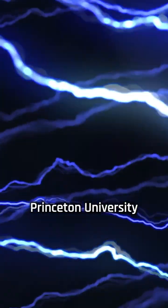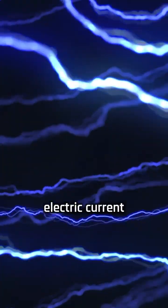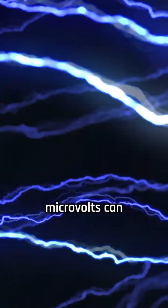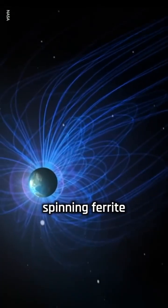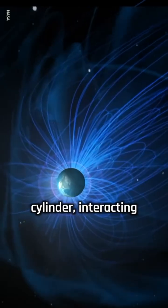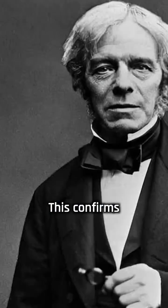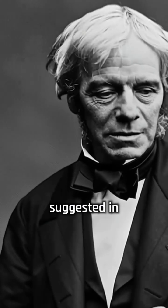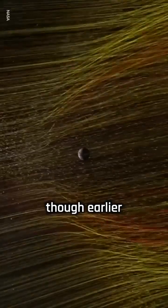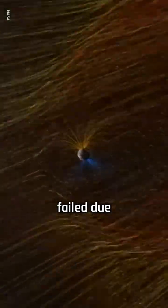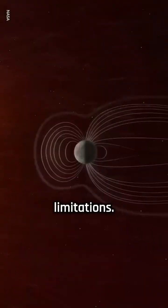Researchers at Princeton University showed that a small electric current, about 17 microvolts, can be produced by a spinning ferrite cylinder interacting with Earth's magnetic field. This confirms what Michael Faraday first suggested in the 1830s, though earlier experiments failed due to material and design limitations.